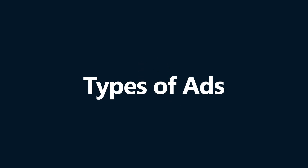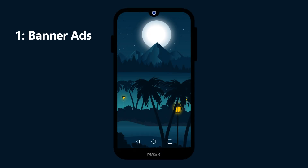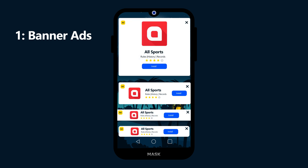Let's start with the types of ads. There are mainly 5 types of ads used in Android apps or games. Number 1 is Banner Ad. As defined from the name, banner ads are banner type ads that can include text only, text with an image, or any GIF animation also. There are different sizes and places to use banner ads. Let's talk about banner ad sizes and their placements.